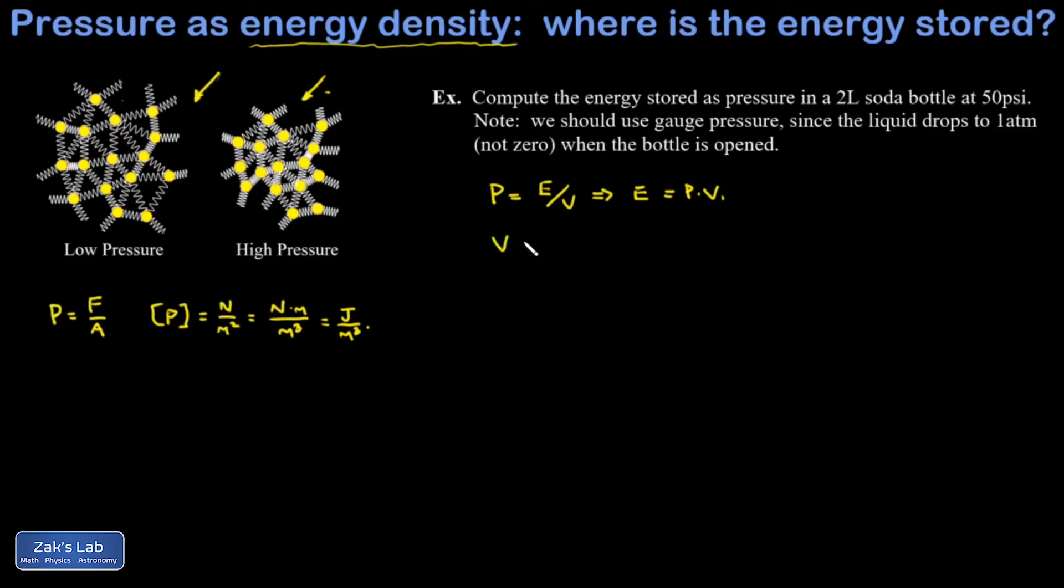So I want to convert that volume of two liters into cubic meters, and you have to remember that there are 1,000 liters in a cubic meter. So I get 0.002 cubic meters for the volume. And then my pressure of 50 psi has to be converted, and you have to remember that there are 6,895 pascals per psi, and I get 3.45 times 10 to the fifth pascal.